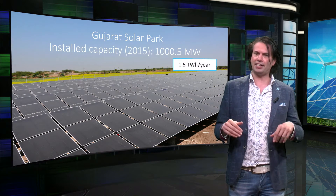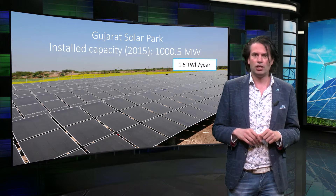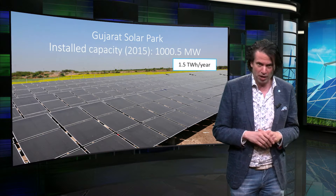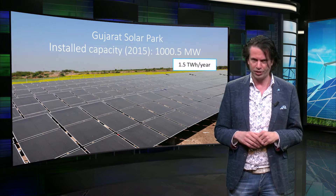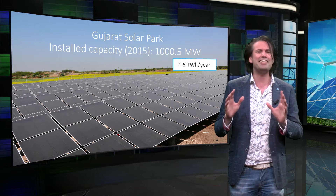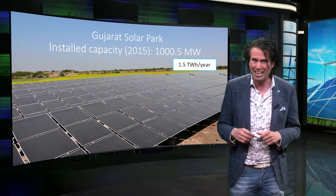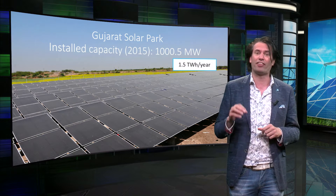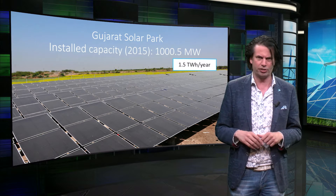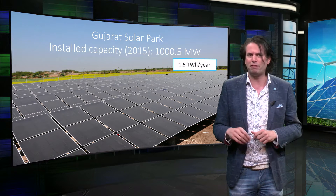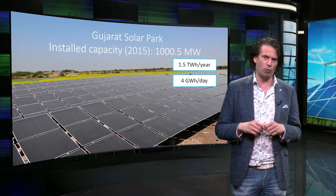Let's take a look at an example of a large-scale solar energy farm. The Gujarat Solar Park in India is one of the largest combined solar farms in the world. It consists of around 84 large-scale projects that currently have a combined installed capacity of 1000 MW, which is called Wattpeak in the solar industry. In 2015 the combined production was over 1.5 TWh.